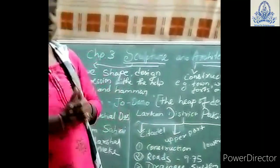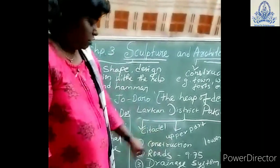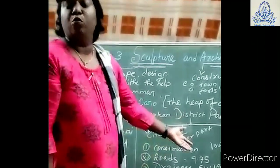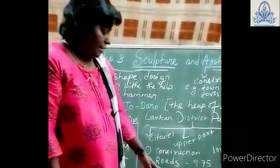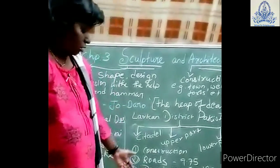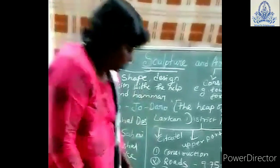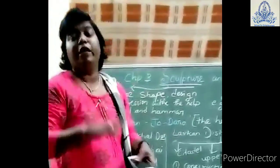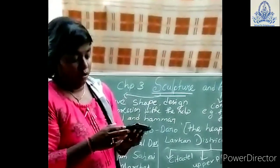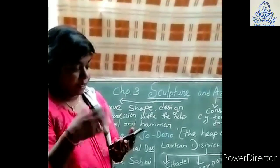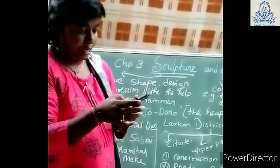The specialities of the construction include roads which were 9.7 to 5 meters broad, a drainage system, public parks, and public buildings. I will show some visuals which will help you understand this topic and make it easier to study and focus on what I am going to tell you.